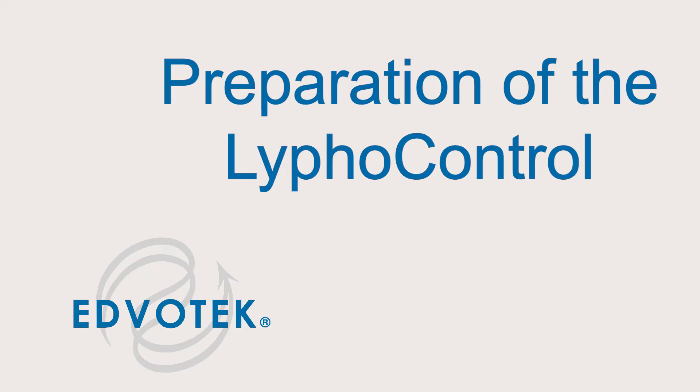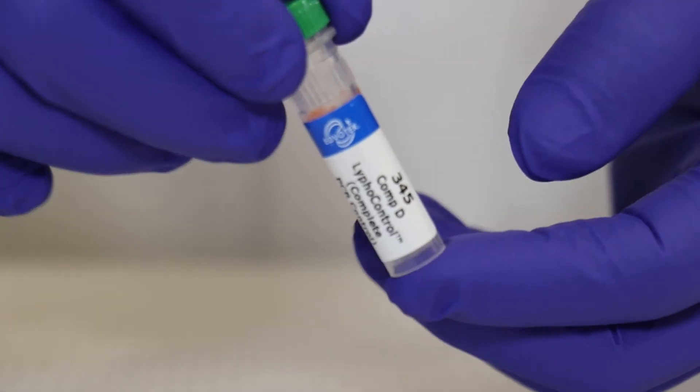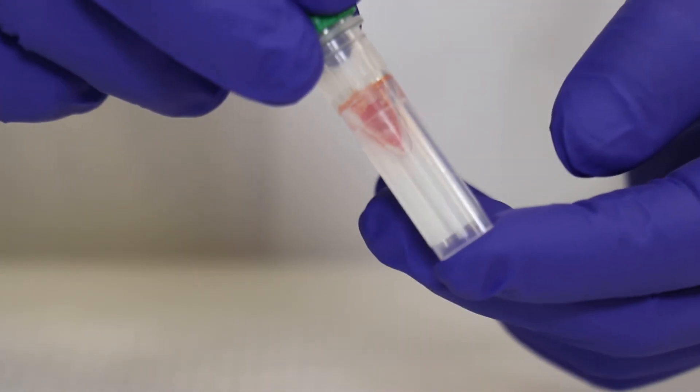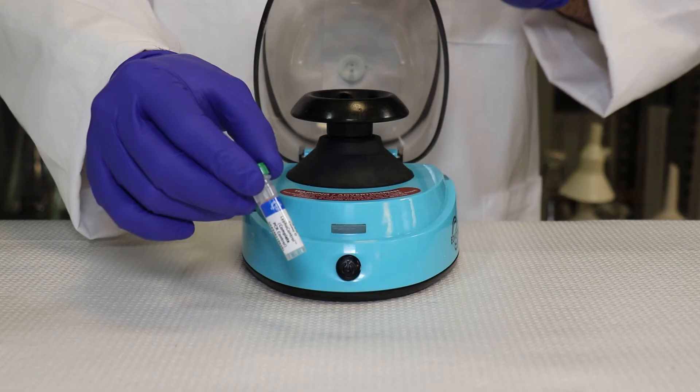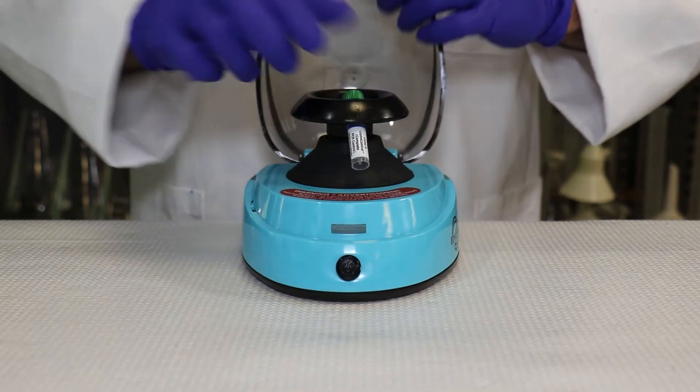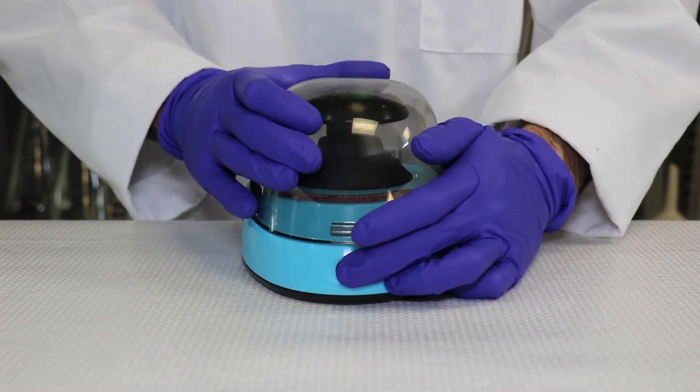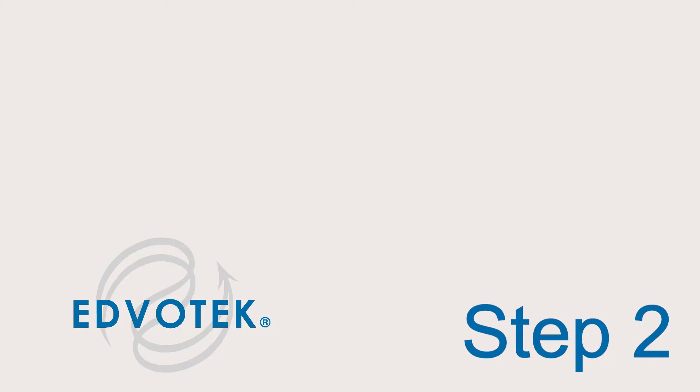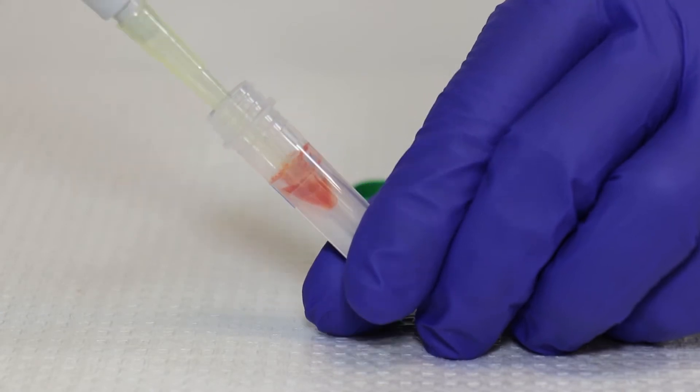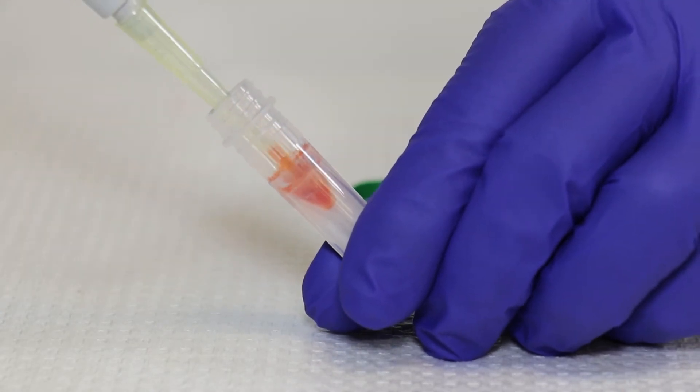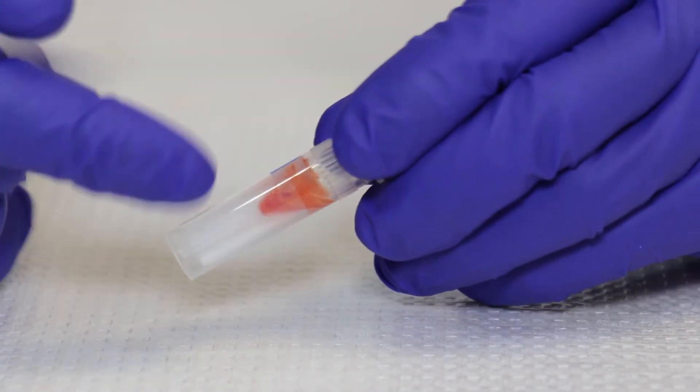Preparation of the lyophilized control: Step 1: ensure that the lyophilized solid is at the bottom of Component D lyophilized control tube. If not, centrifuge the tube at full speed for 10 seconds. Step 2: add 320 microliters of TE buffer to the lyophilized control tube and mix well, then place the tube on ice.